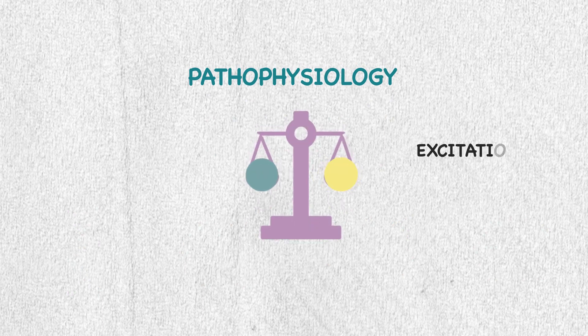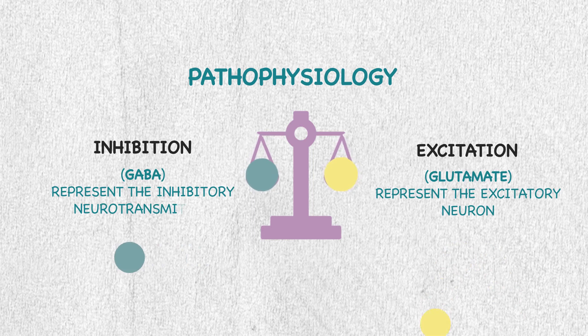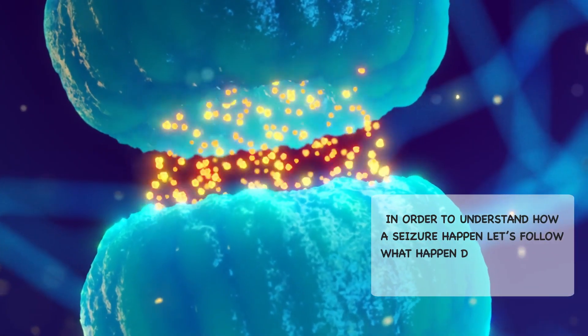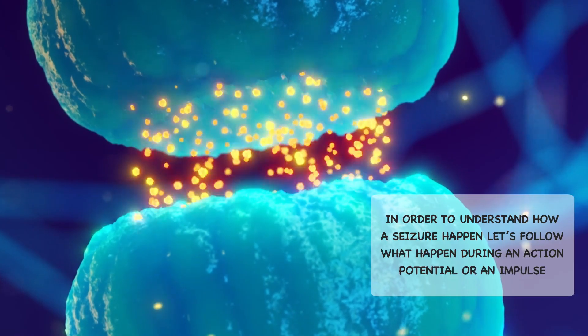Now let's dig deep into the pathophysiology. Seizure attacks happen when there is an imbalance between excitation and inhibition in the brain. We have two types of neurons that counteract each other: glutamate, which represents the excitatory neurons, and GABA, which represents the inhibitory neurons.